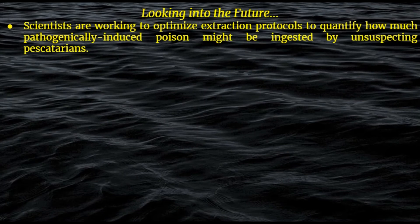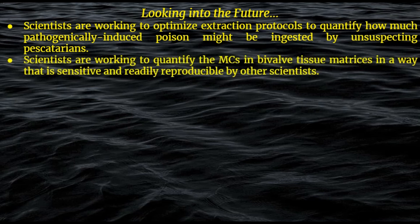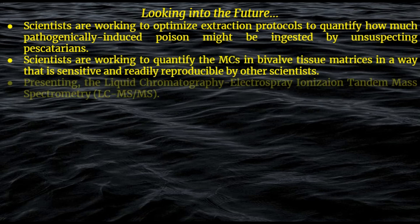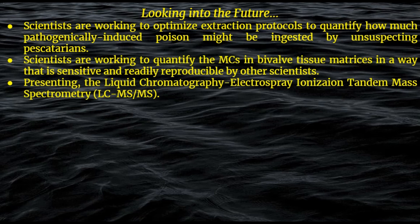Looking into the future, scientists are working to optimize an efficient extraction protocol to quantify how much microcystin — the pathogenically induced poisons from Microcystis aeruginosa — might be ingested by unsuspecting pescatarians. A major hindrance is that there is no standardized protocol for monitoring microcystins in bivalve tissues yet — and that is exactly what I've been working on all summer as a biogeochemist. A technique known as liquid chromatography electrospray ionization tandem mass spectrometry is employed, providing specificity and good sensitivity.